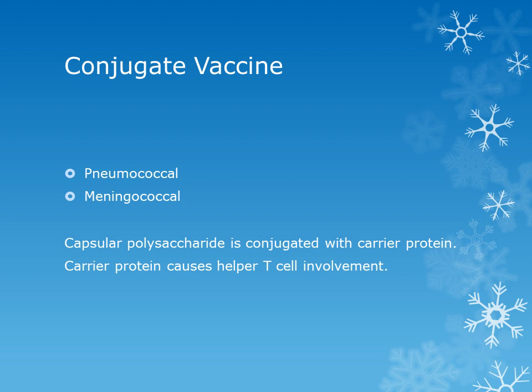Conjugate vaccine is a new introduction in immunology. A conjugate vaccine is given against those microorganisms which have a capsular polysaccharide. In the formation of this conjugate vaccine, the capsular polysaccharide is conjugated with a carrier protein, and the carrier protein causes helper T cell involvement, ultimately resulting in an immune response against these microorganisms.